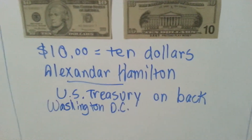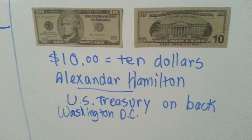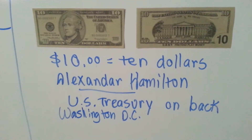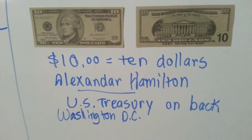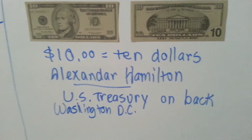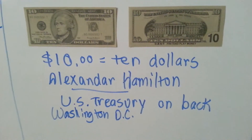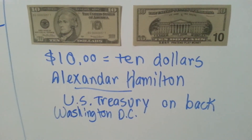This is a ten dollar bill. It's got Alexander Hamilton on the front, and a picture of the U.S. Treasury in Washington D.C. on the back.